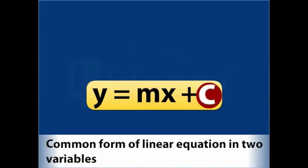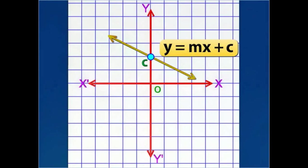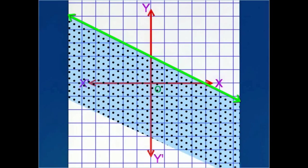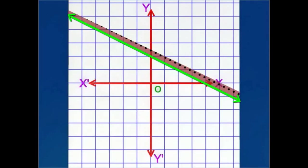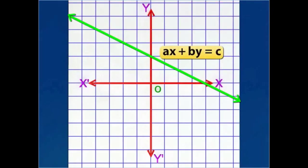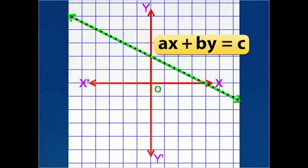The constant c represents the point at which the straight line cuts the y-axis. The straight line ax plus by equal to c divides the plane into three sets of points: a set of points on the line, a set of points on one side of the line, and a set of points on the other side of the line. The set of points on the line represents the equation ax plus by equal to c.